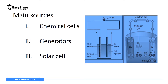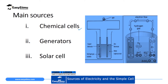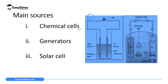We have three main sources of electricity. The first one is a chemical cell, which we are going to discuss in this lesson. Chemical cells use chemical reactions to produce electricity. As you can see in the diagram, a chemical like zinc sulfate solution causes electrons to flow, and when electrons flow that causes current. The second main source is generators, and finally we have solar cells, which we will discuss more in Form 4 under photoelectric emissions.